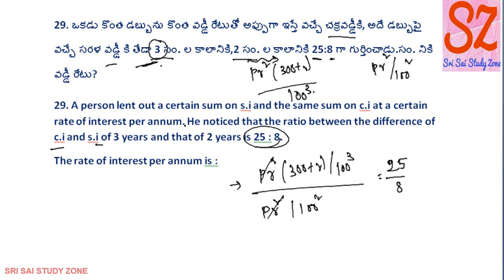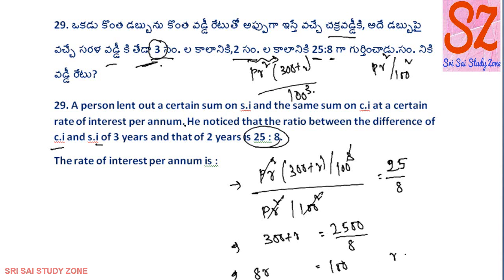The difference between the two is 25 by 8. So, P r squared cancels with 100 squared. That is equal to 300 plus r. So here 100 is 2500 by 8. So 8 is equal to 8. R is equal to 8. 3 is equal to 24. So R is equal to 100 by 3, and that is equal to 100 by 8. So that is equal to the rate being 12 and 1 by 2 percent.